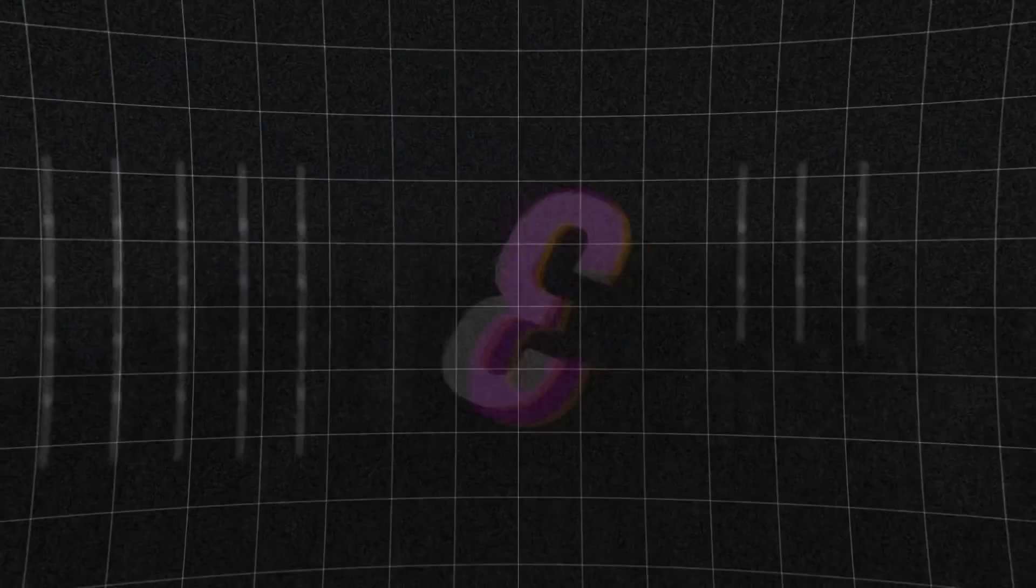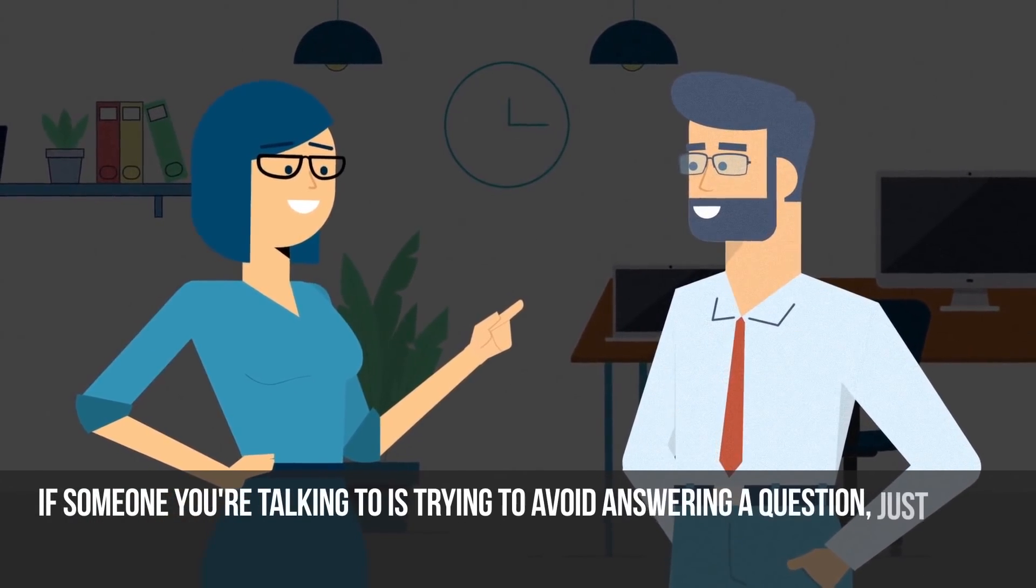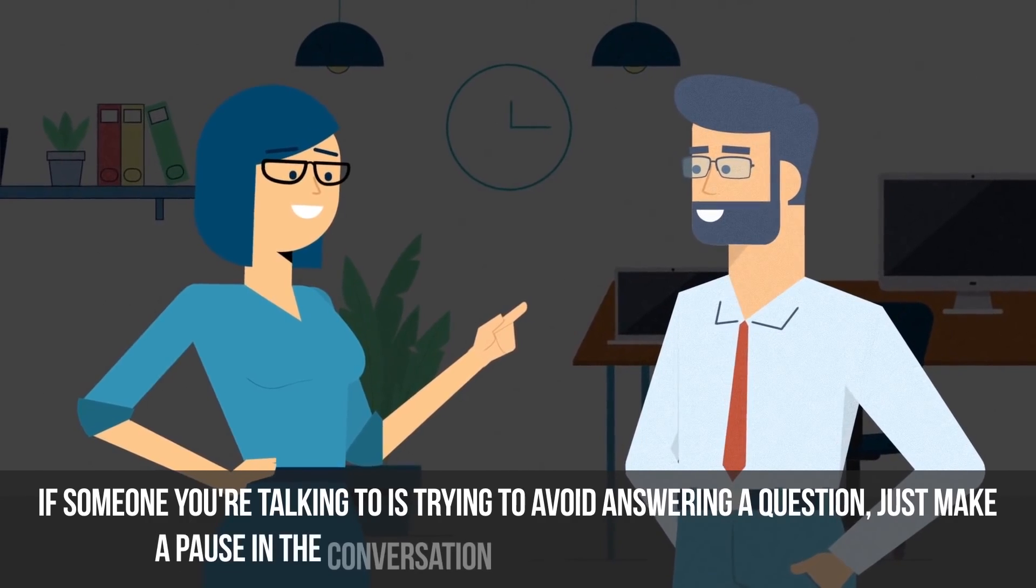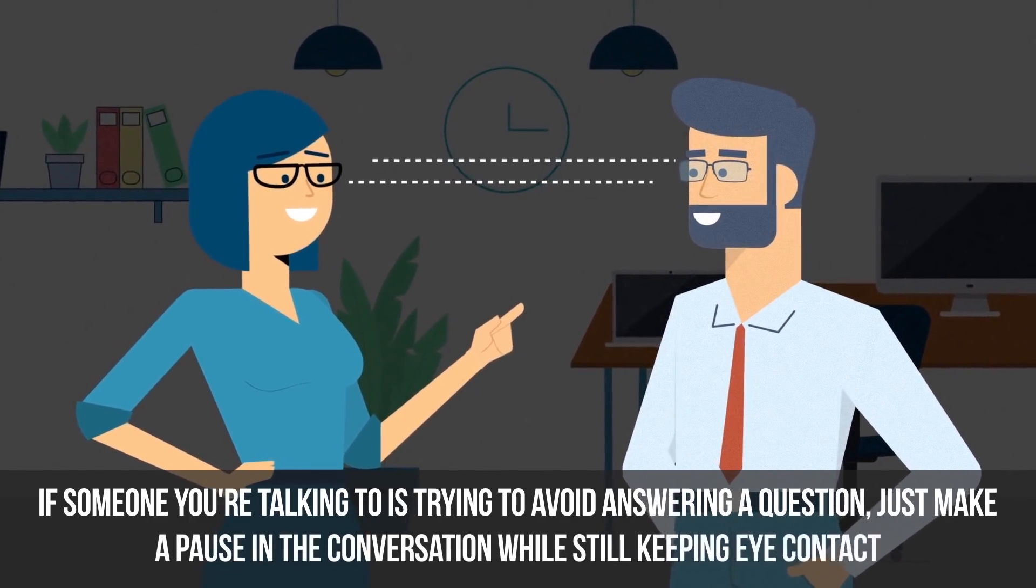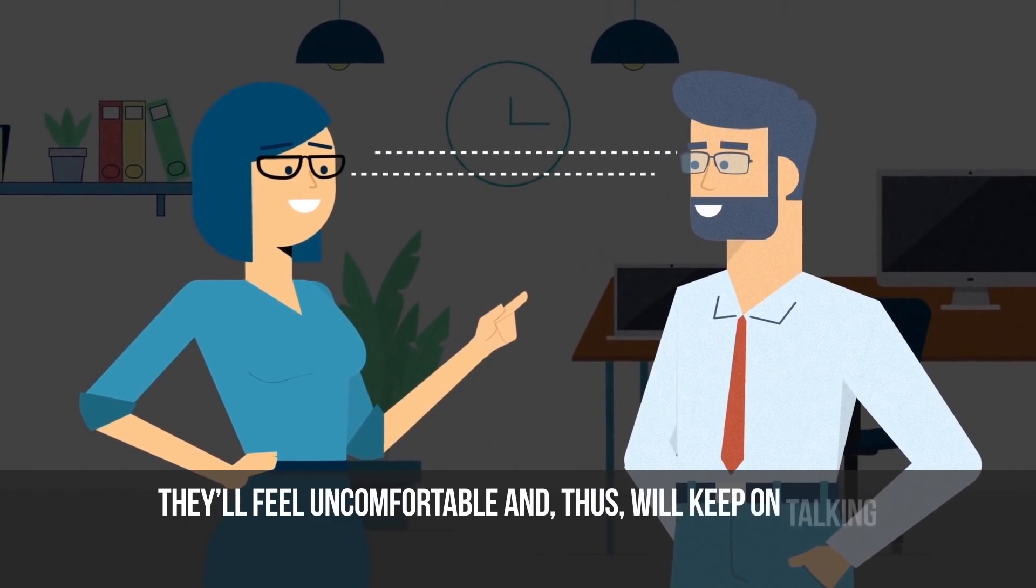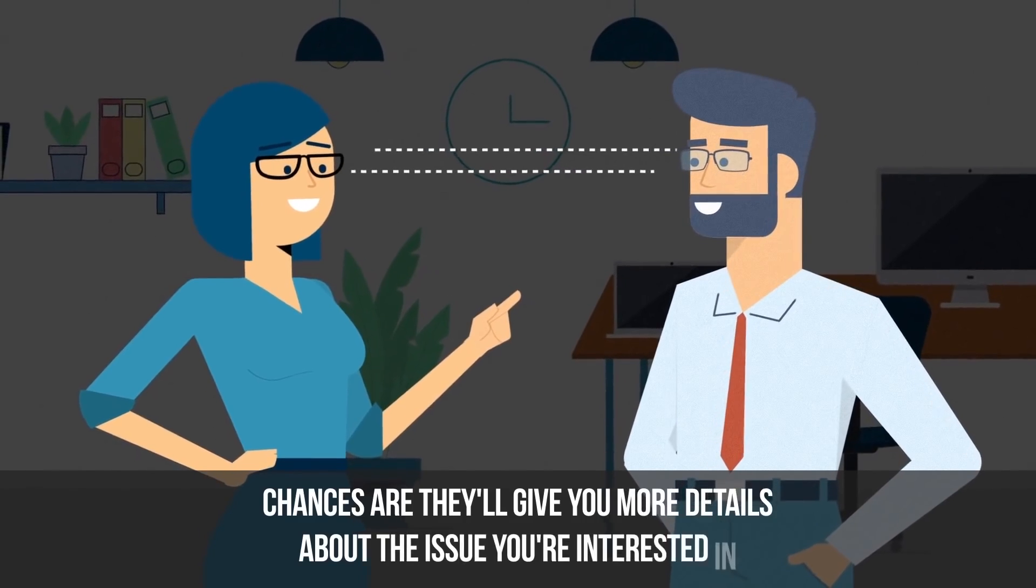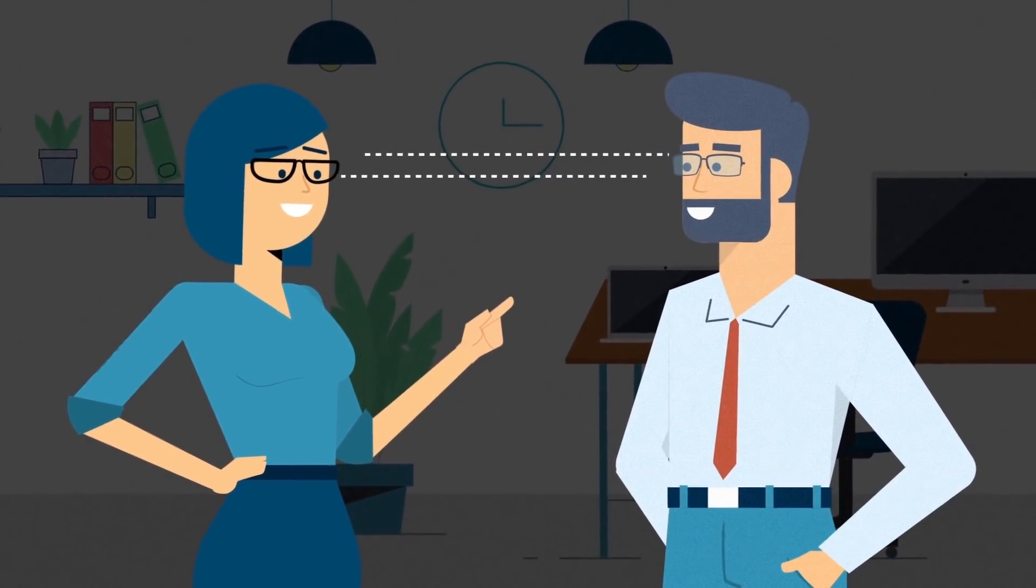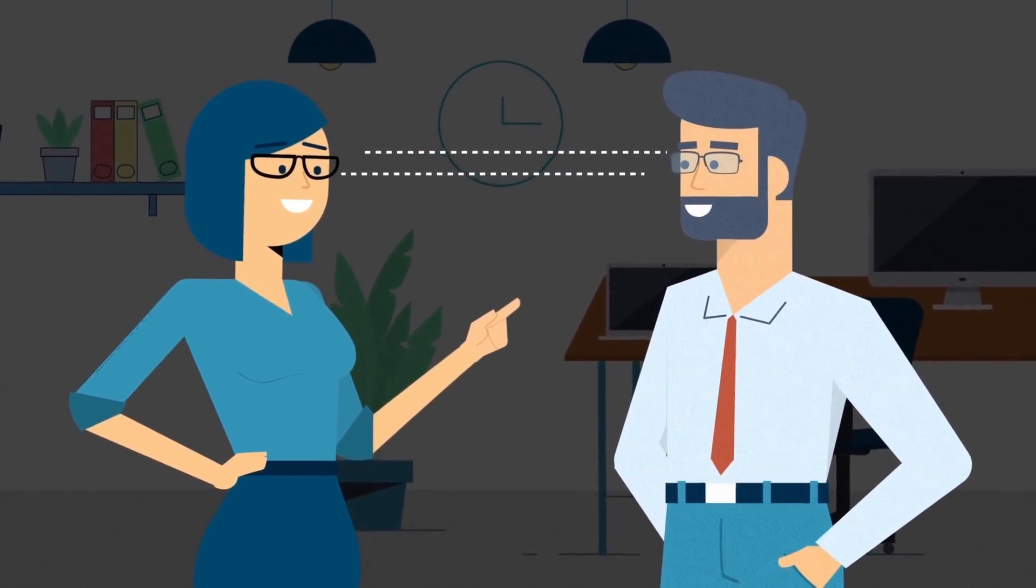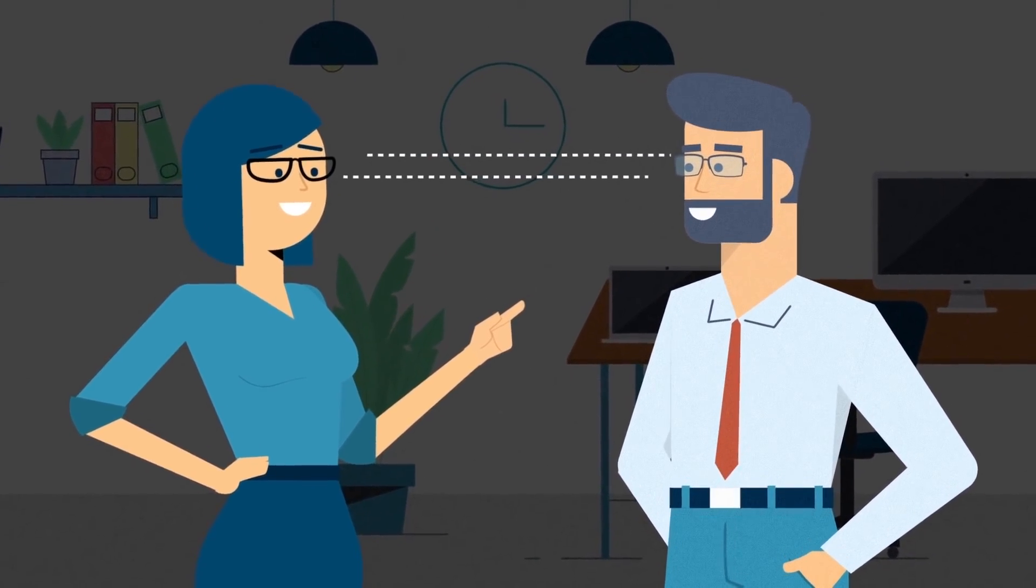If someone you're talking to is trying to avoid answering a question, just make a pause in the conversation while still keeping eye contact. They'll feel uncomfortable and, thus, will keep talking. Chances are they'll give you more details about the issue you're interested in. They may even start telling you the truth, if they were lying, since they'll believe that your silence and your look are signs that you already know the real facts.